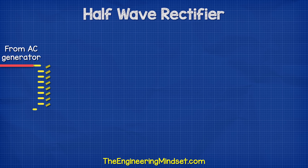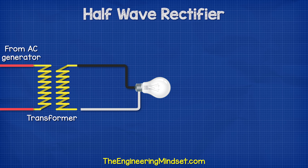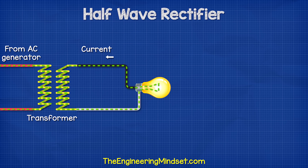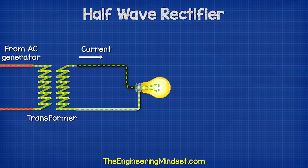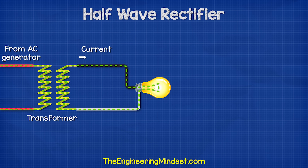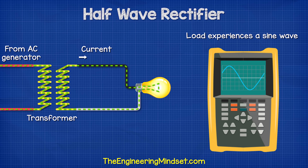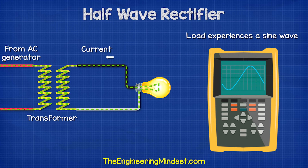If we looked at an AC supply with a step-down transformer, which simply reduces the voltage to a safer level, the electrons are flowing forwards and backwards. So the load experiences an AC sine wave.